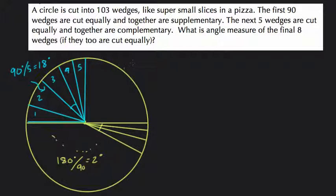What is the angle measure of the final 8 wedges? Well, the final 8 wedges must fill the remaining space here. Those 8 wedges take up this portion of the pie, the last 90 degrees. So they're also complementary.